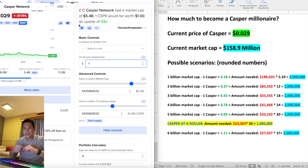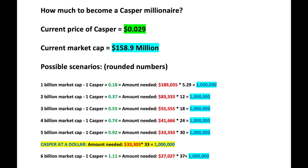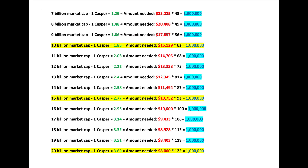I'm going to link that website in the description below. Before I go further, I want to explain how my chart works. This chart shows what you need to have invested in Casper at this exact moment in order to become a Casper millionaire. Right now Casper is at 2.9 cents. The green represents the potential price of Casper at a given market cap, the red shows what you would need invested right now, and the black numbers represent the multiplier on your money at that market cap.